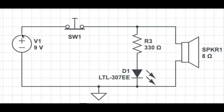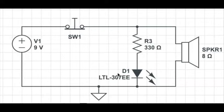These lines are just wires. SW1 over here is essentially just a switch, and a switch when pushed connects these wires, and when it isn't pushed these wires are disconnected. R3 is a 330 ohm resistor, and essentially what a resistor does is reduce current. D1 over here is an LED and it just emits light. Speaker one is just a speaker.